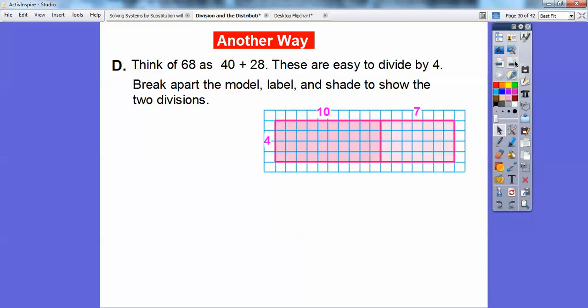So if we broke the model up, we'd get these two little rectangles. Here's my 40 squares, which is a 4 by 10. Here's my 28 squares, which is 4 times 7 right there. So 10 plus 7 will get us that 17 right there. So 68 divided by 4 is the same as 40 divided by 4 plus 28 divided by 4, which is 10 plus 7 or 17. So 68 divided by 4 is going to be 17 no matter what.